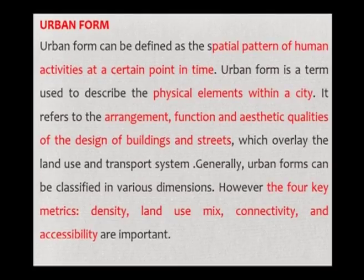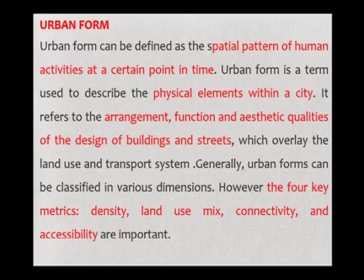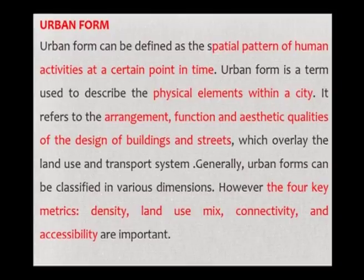Urban form can be defined as the spatial pattern of human activities at a certain point in time. Time as a dimension is very important because over the past 100 years, the urban form has changed tremendously. Urban form is a term used to describe the physical elements within a city — it refers to the arrangement, function and aesthetic qualities of the design of buildings and streets, which overlay the land use and transport system. Generally, urban forms can be classified in various dimensions, but the four key metrics — density, land use mix, connectivity and accessibility — are very important.